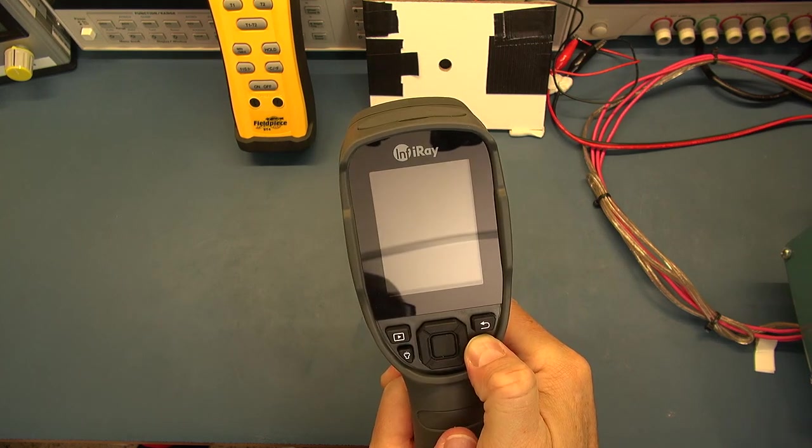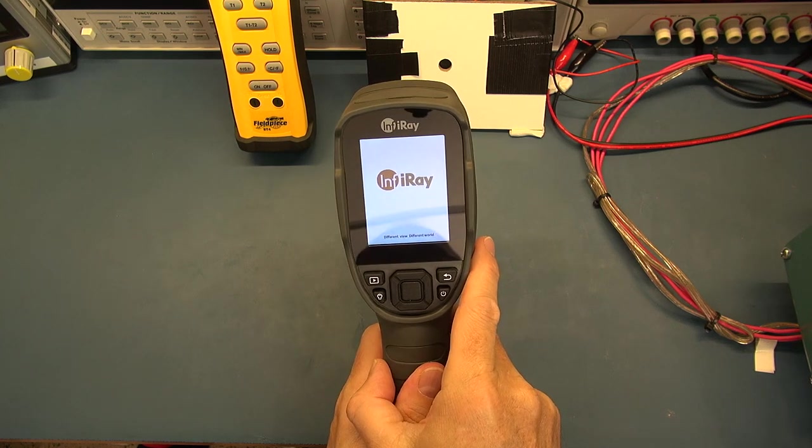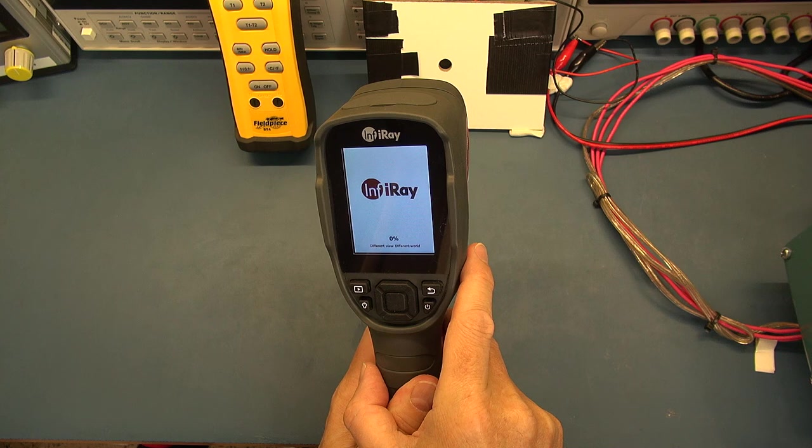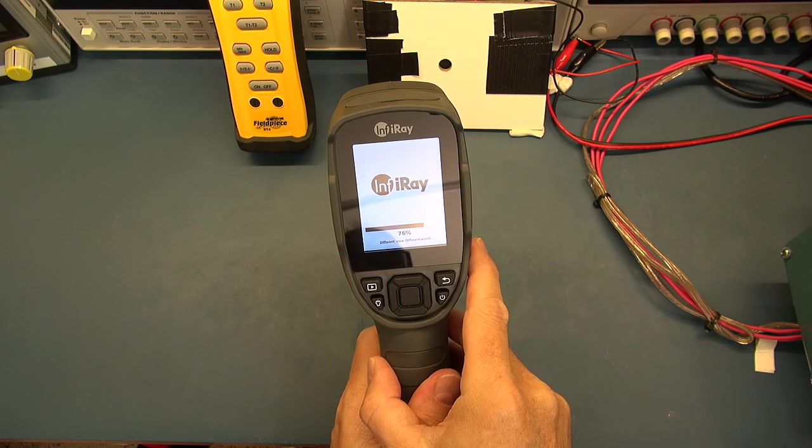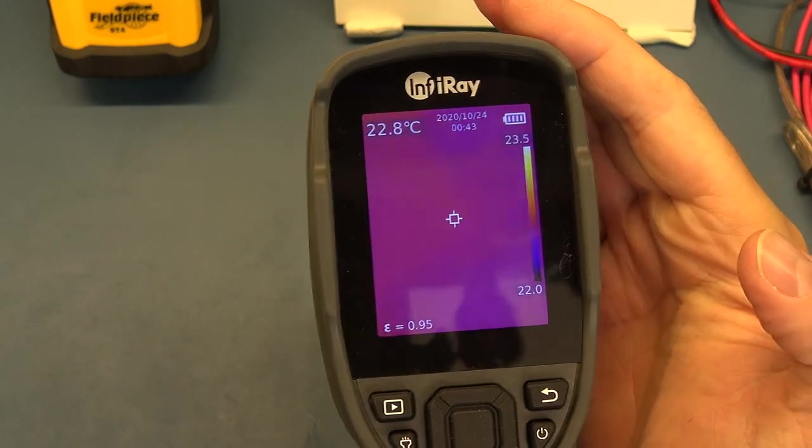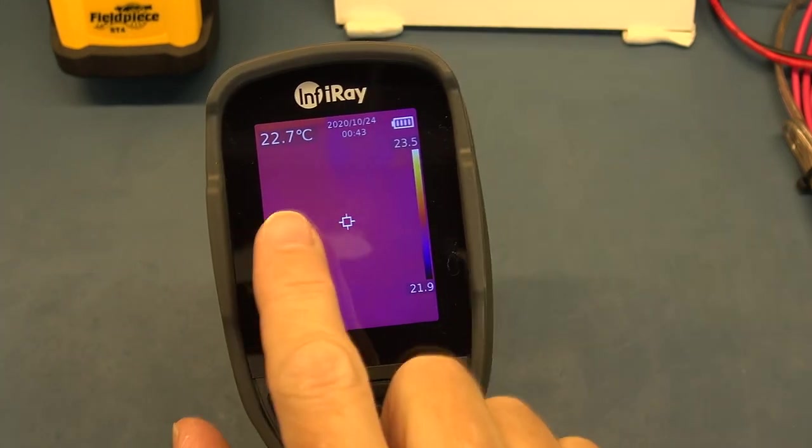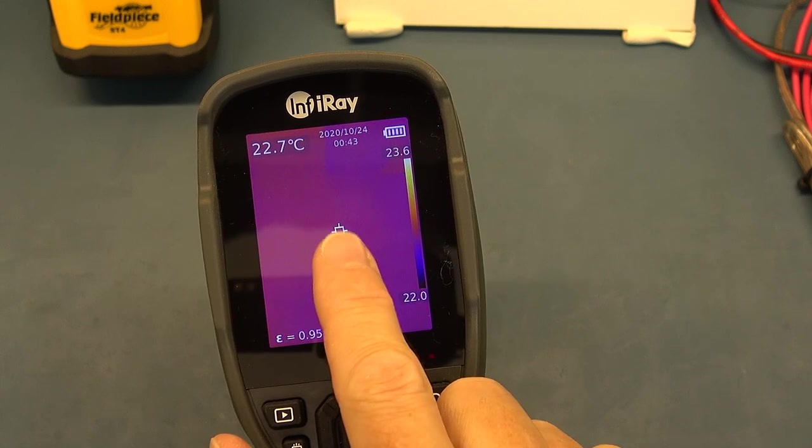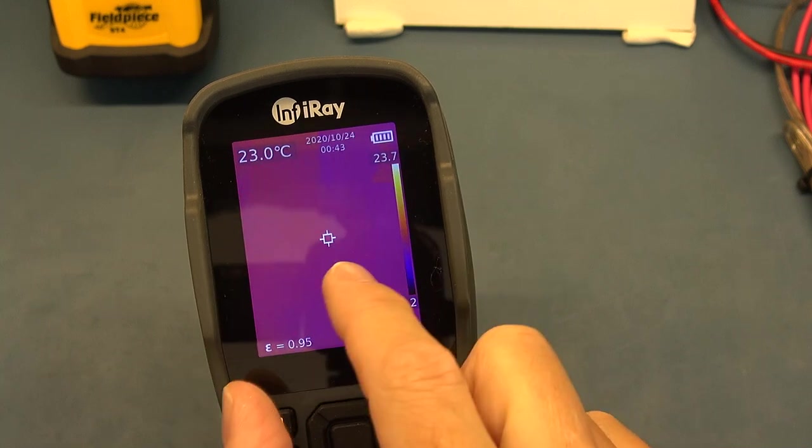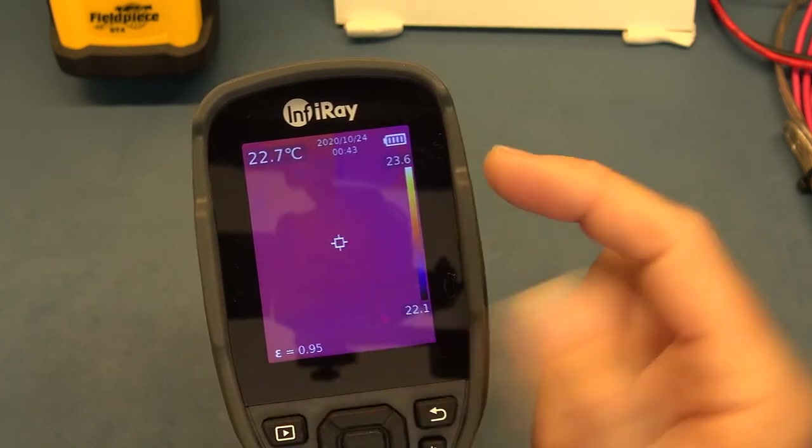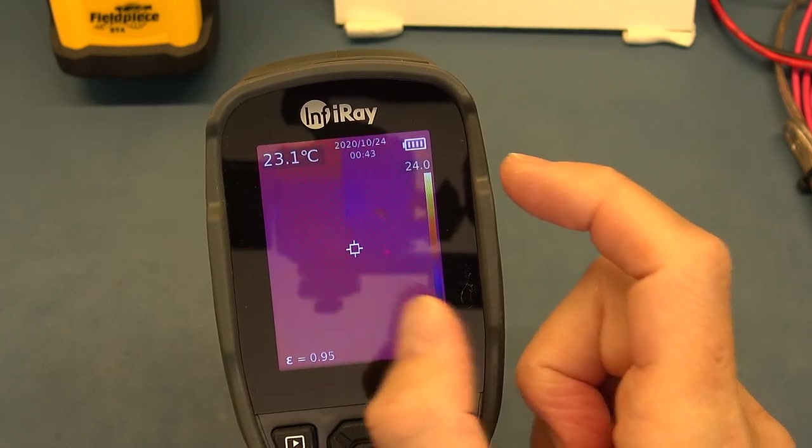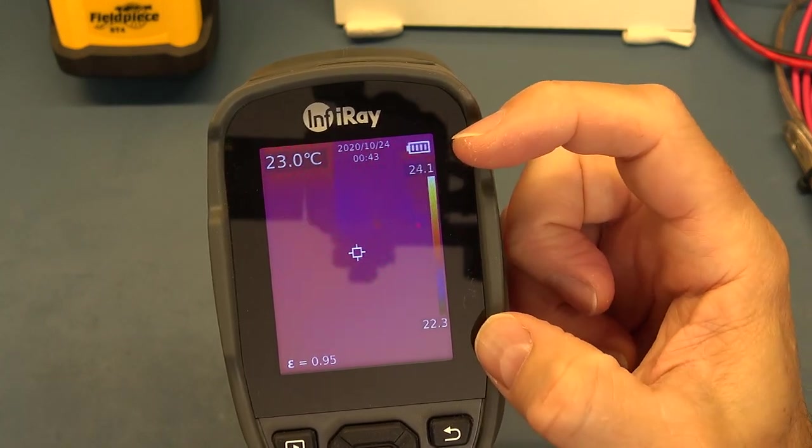When we power this up, it boots up with the InfiniRay logo. It takes a little bit of time to boot up. And there we go, it's booted up already. On the display, you'll have your readings, which of course you can alter. You've got your spot. You can change it with no spot. You can have a hot and a cold spot. You've got your temperature reading, which you can change between Fahrenheit, Kelvin or Celsius. You've got your time and date stamps, your battery status. You have your palette on the side here. So your palette is the color choice. You can have like a black and white, where white is hot or white is cold.